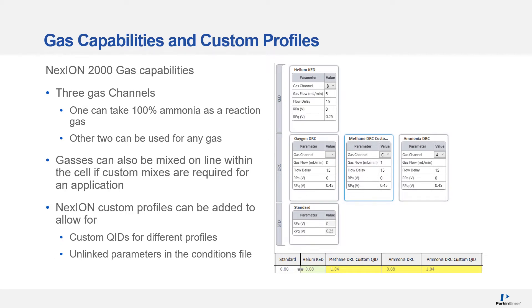The Nexion 2000 has many gas capabilities that help with interference removals. It comes with three gas channels, one of which can take 100% ammonia as a reaction gas and the other two can use any other gases you require. Gases can also be mixed online within the cell if custom mixers are required for a specific application. The Nexion also comes with customizable profiles, allowing you to customize your QID for different profiles or unlink certain condition parameters.